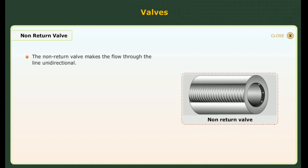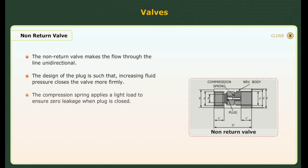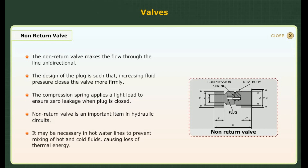Non-return valve. The non-return valve makes the flow through the line unidirectional. The design of the plug is such that increasing fluid pressure closes the valve more firmly. The compression spring applies a light load to ensure zero leakage when the plug is closed. Non-return valve is an important item in hydraulic circuits. It may be necessary in hot water lines to prevent mixing of hot and cold fluids, causing loss of thermal energy.